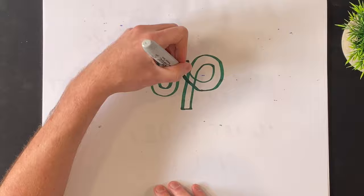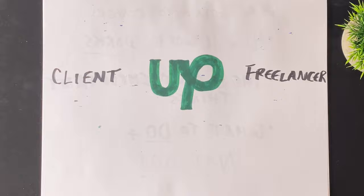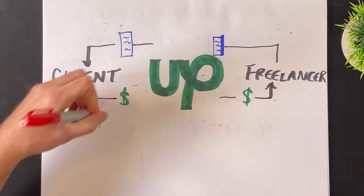On Upwork, people who need something done come and post their job—that's called a client. And people who can do that job are called freelancers. Most people think Upwork is a marketplace. Instead, think of Upwork like a trusted friend who holds onto the money while you do a job. There are over 200,000 jobs that clients have posted on Upwork right now.